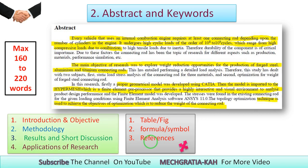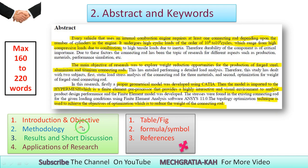When writing the abstract, first you should define the introduction and the objective of your research. Then you should include the methodology — your software, your experiment, and your application. After that, you should give the results and a short discussion of the results, and also mention the application and scope of your research.